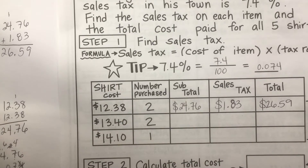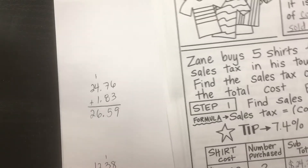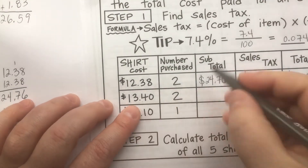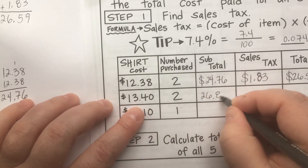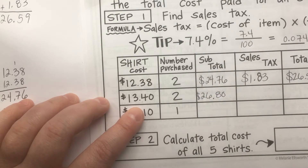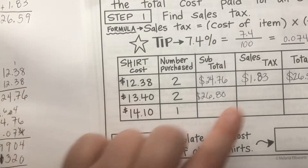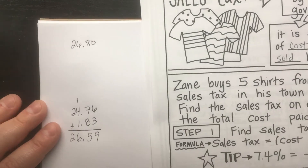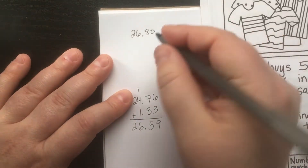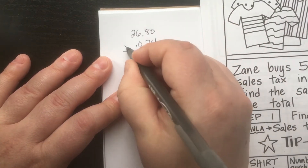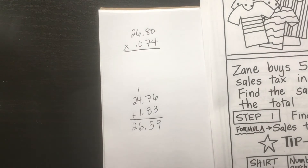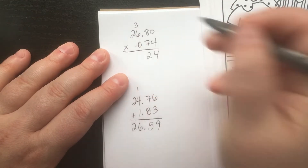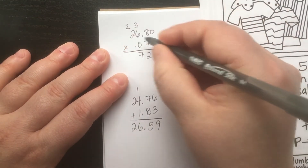Next shirt is $13.40. In my head, two thirteens is twenty-six and two forties is eighty, so two of those shirts is $26.80. Now I'm going to calculate the sales tax by multiplying $26.80 times our rate of 0.074. Four times zero, four times eight — four times six is twenty-four plus three is twenty-seven, four times two is eight plus two is ten.